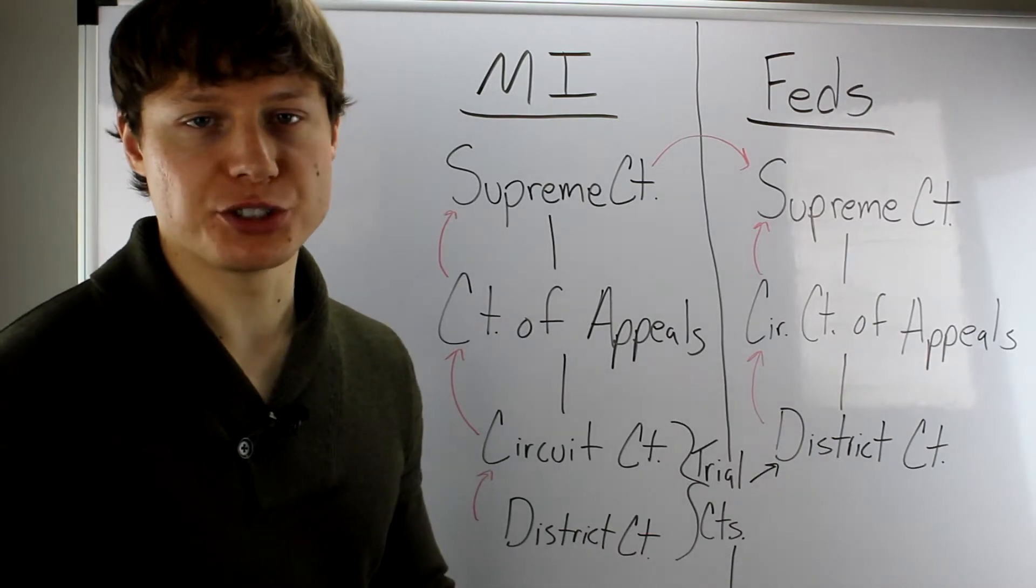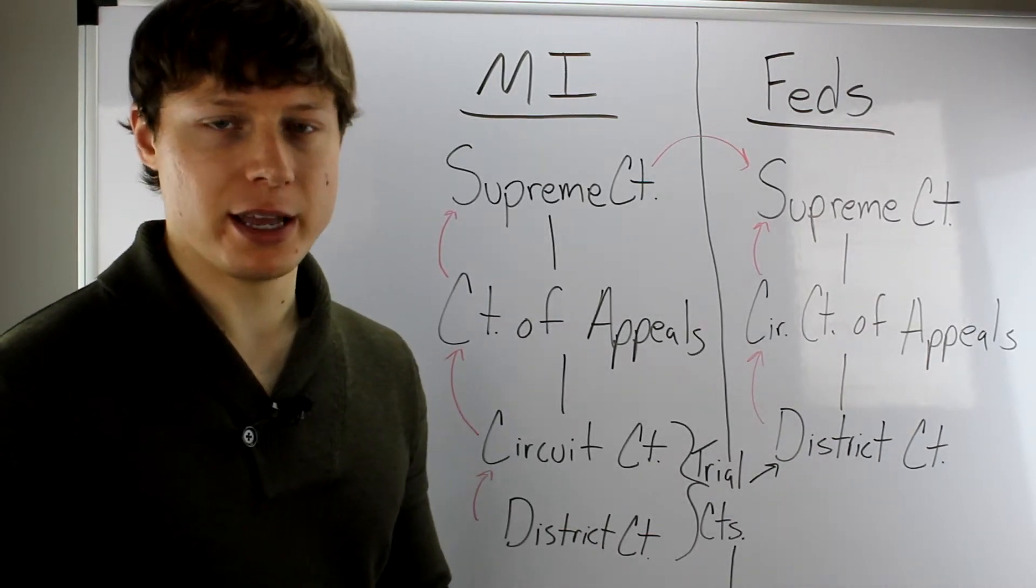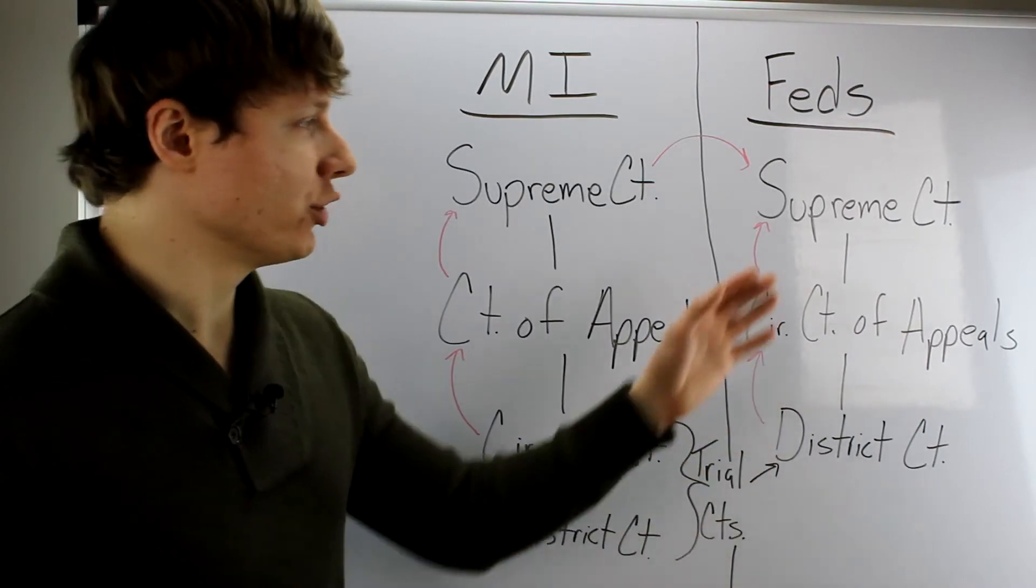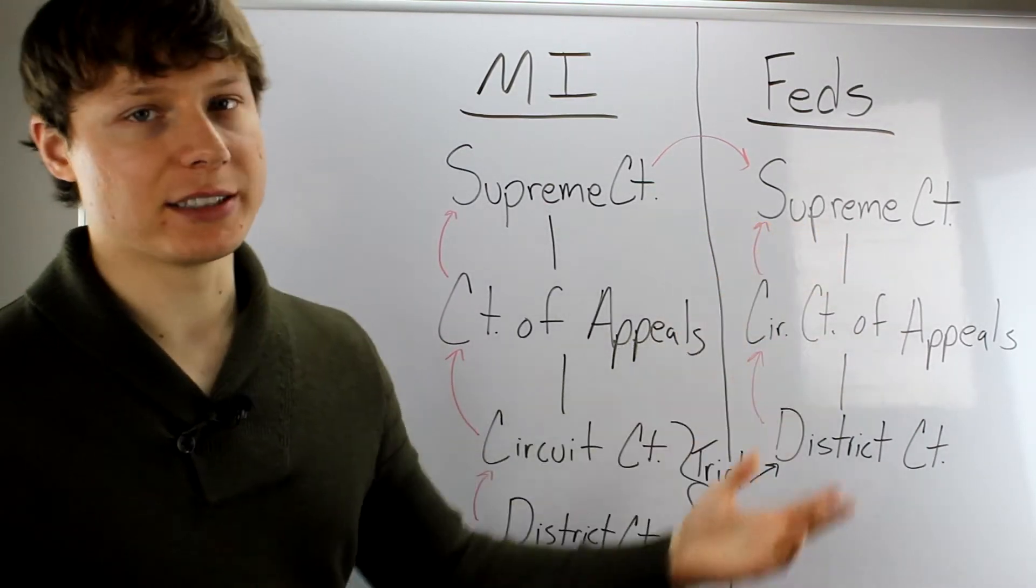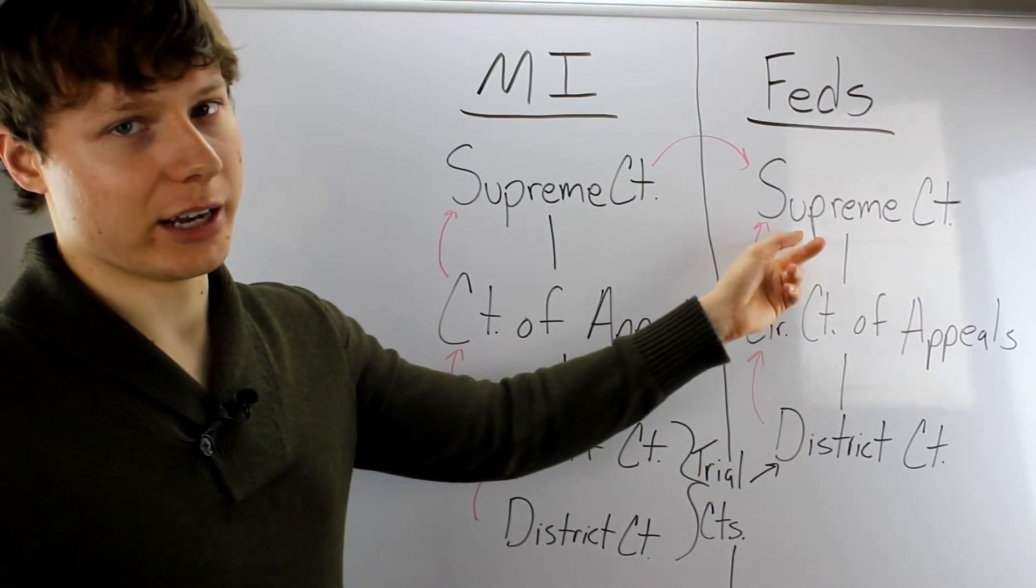Again, you'd have to ask for permission. The Supreme Court of the United States would have to give you permission to appeal to them. And then at that case, once you get up to this level, that's it. You don't appeal anywhere else. That's the end of the line right there.